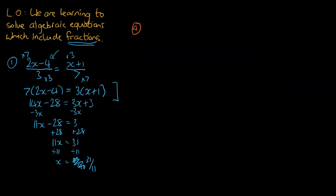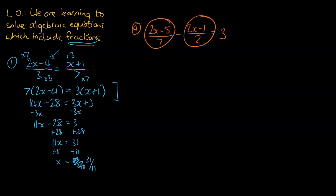We're back. I've cleared all that working and I've actually just realized we are only going to do one more example, but I'm going to make it a doozy to make up for that. So we're going to have 2x minus 5 divided by 7, and from that we're going to subtract 2x minus 1 divided by 2, and that will equal 3. This one's a bit different because we've normally had one thing on the left and one thing on the right — now we've got two things on the left. We can't just divide by 7 because there are two different parts here. So we need to simplify it to be a single fraction first, and then we can carry on with our solving.